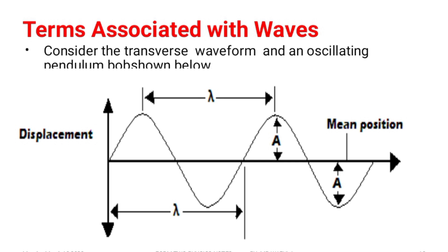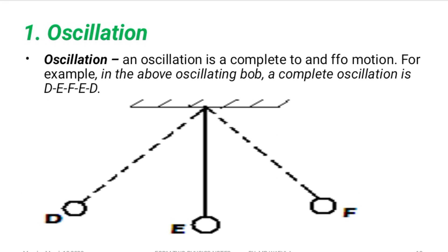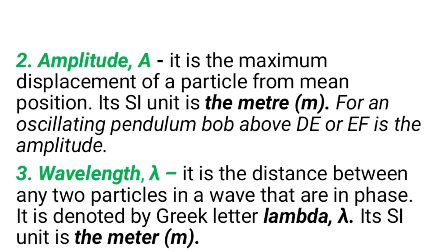Terms associated with waves. We have different terms that are associated with waves. We'll start with an oscillation. A full wave makes a complete oscillation. An oscillation has a complete, has a trough and a crest. Then, we'll talk about the amplitude. The amplitude is the maximum displacement from the mean position. An oscillation, for example, in this case, we have D, E, F, E, D. It is a complete to and fro motion. When this bulb is released from D, it will move to E, F, and back.